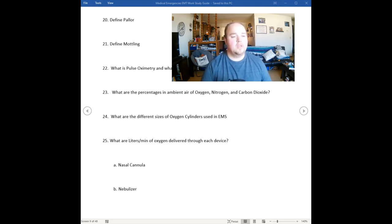The different sizes, the most common one you're going to see in the back of an ambulance is going to be your D-size cylinder. Your D-cylinders are what you're going to carry in your airway bag. It's what you're going to carry on your cot. Your D-cylinders are very common size of oxygen cylinders.